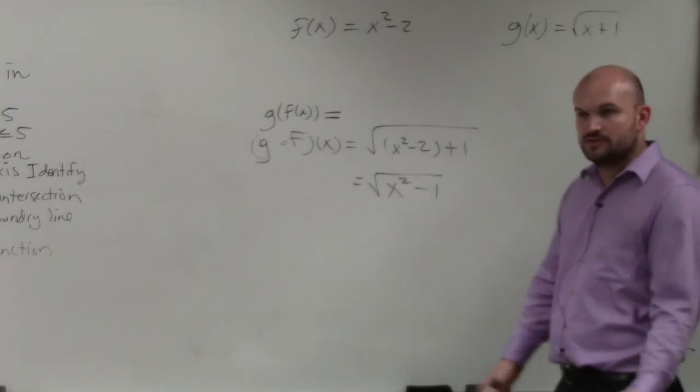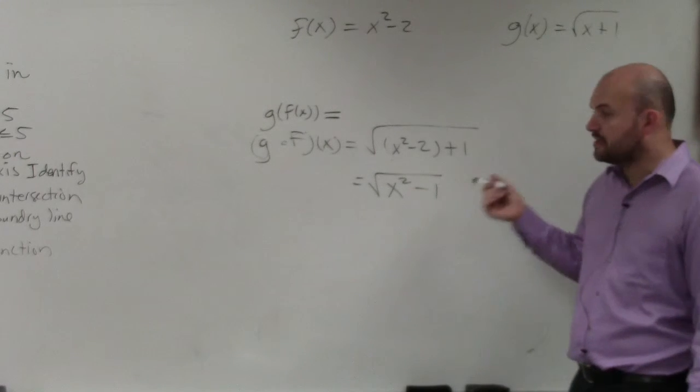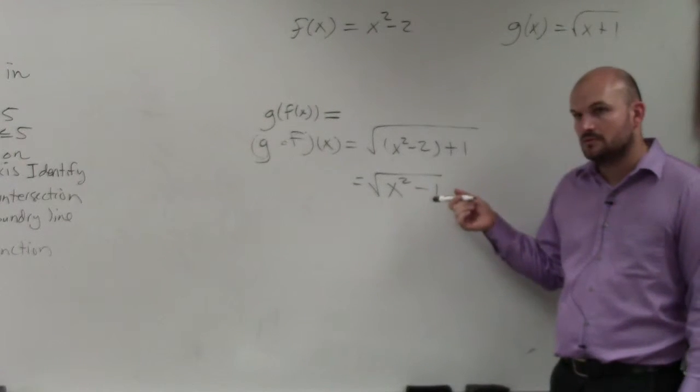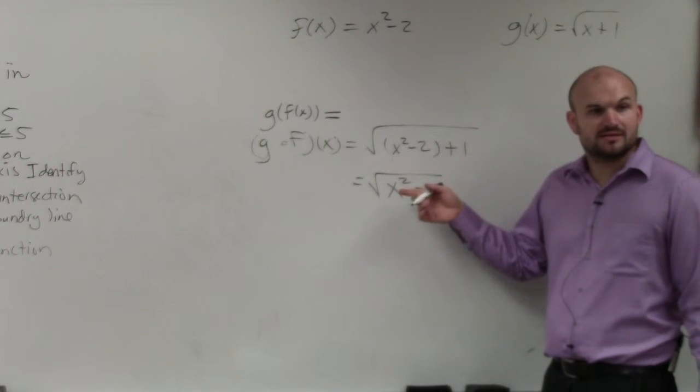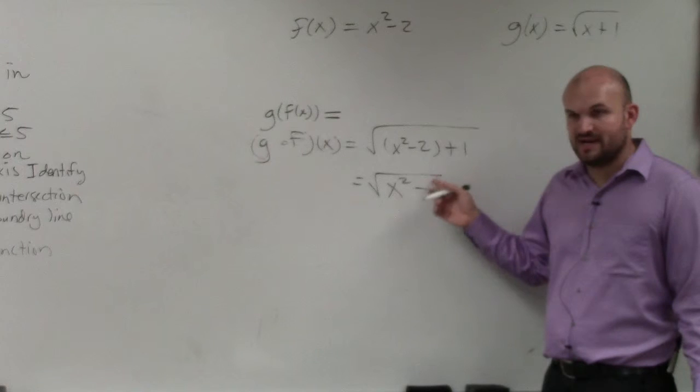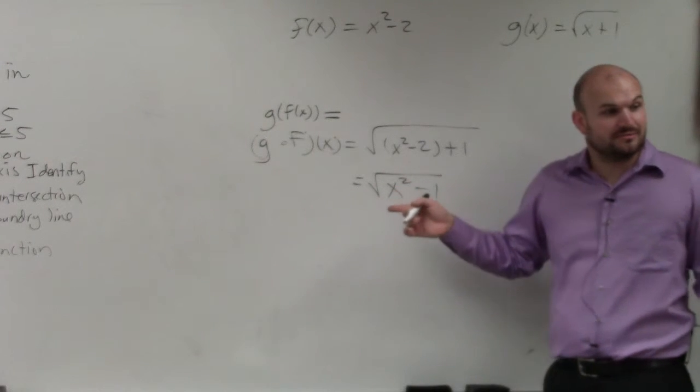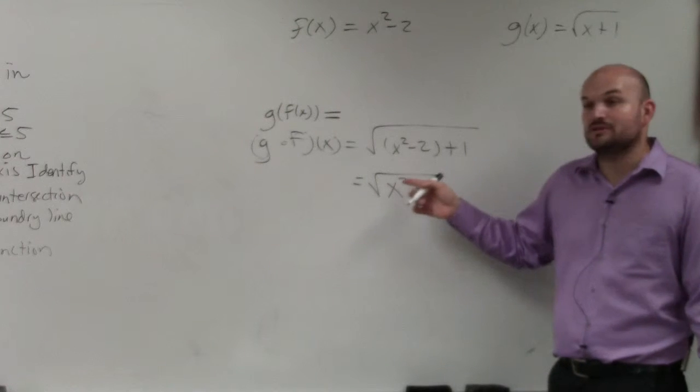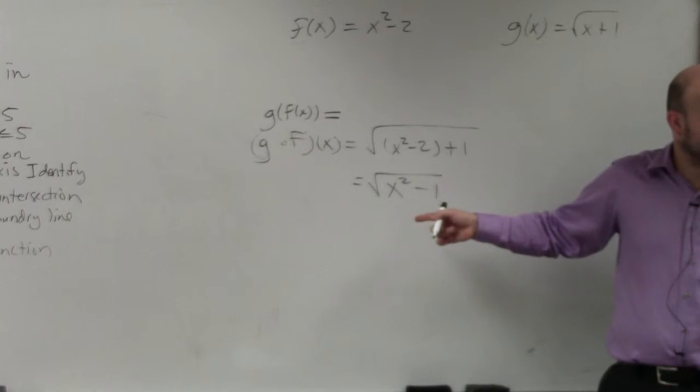So if you look at the domain here, what is the only thing we can't have? If you do 1, 1 squared is 1, 1 minus 1 is 0. What about 0? Can it be 0? Well, if you do 0 squared, you get 0. 0 minus 1 is negative 1. So it can't be 0.